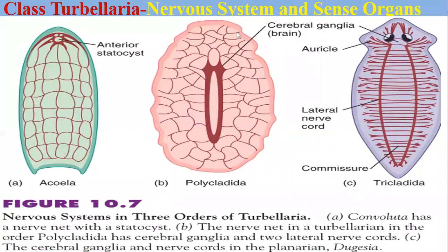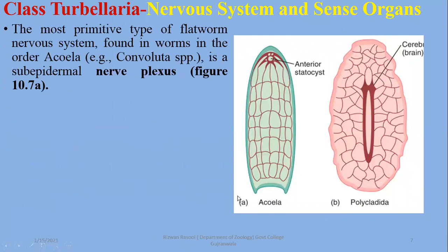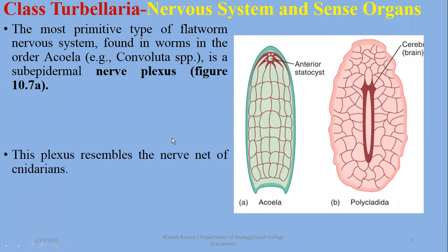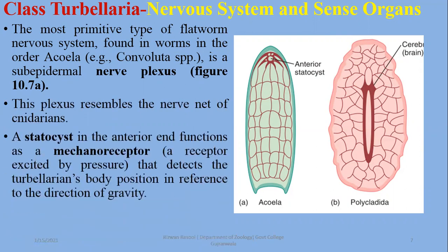Next, we discuss sense organs and the nervous system. In the nervous system, there are three orders of example: Acoela, Polycladida, and Tricladida. The most primitive type of nervous system is discussed here. Neurons are present in the form of a nerve net, called a superficial nerve plexus. A nerve plexus is a network of neurons outside the brain and spinal cord, and this plexus resembles the nerve net of cnidarians as well.